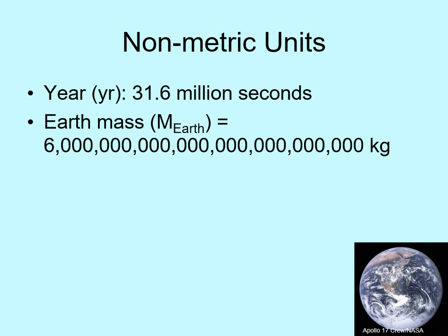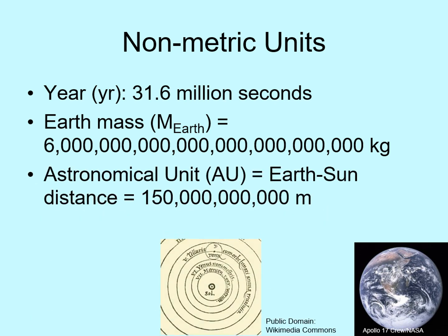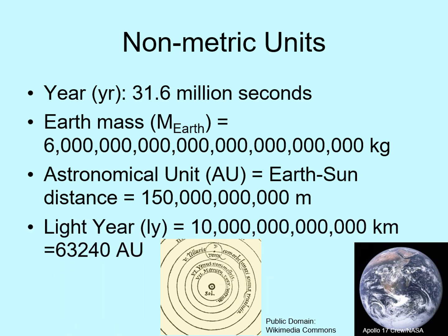We've done a time unit and a mass unit; the last two are both distance units. An astronomical unit is the average distance between the Earth and the Sun — about 150 million kilometers, or 150 billion meters. Lastly, we've got the light year, which, as you remember, is a distance unit: the distance a beam of light travels in one year, about 10 trillion kilometers, or 63,240 astronomical units. You don't have to memorize all of these conversions — they will be available on exams if you need them. But you should get familiar with what these units mean and how to use them, as we'll be seeing a lot of them this term.